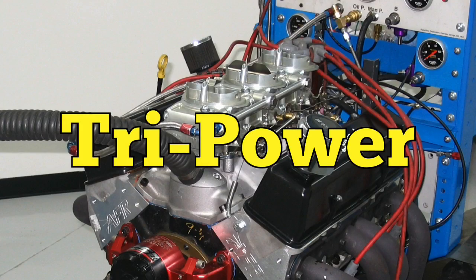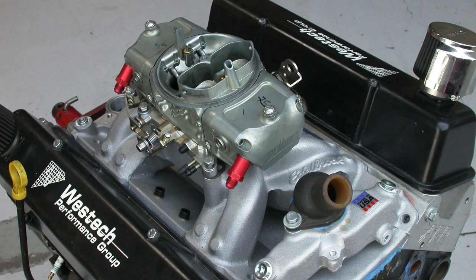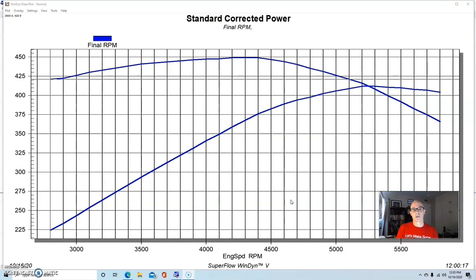In the introduction of this video, we posed the following question: how well do these exotic induction systems for a small block Chevy actually work? Here's the problem: the go-to system for any small block Chevy, certainly a street-strip combination, is a single four-barrel.